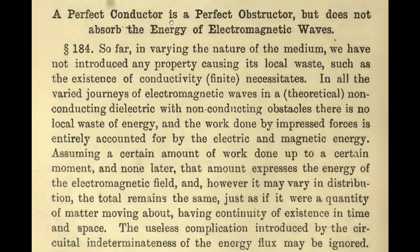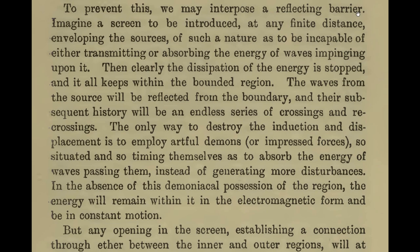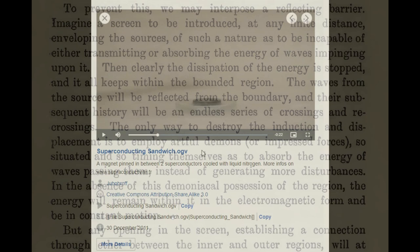Heaviside states that the perfect conductor or superconductor is a perfect obstructor. The obstructor would be like a reflecting barrier — the energy of the waves stay within this bounded region and will be reflected in an endless series of crossings and recrossings. The only way to stop this is to employ artful demons — this is Heaviside humor. These artful demons absorb the energy of the waves passing them instead of generating more disturbances. If you don't have any of these artful demons, then the energy will remain within the electromagnetic form and be in constant motion.